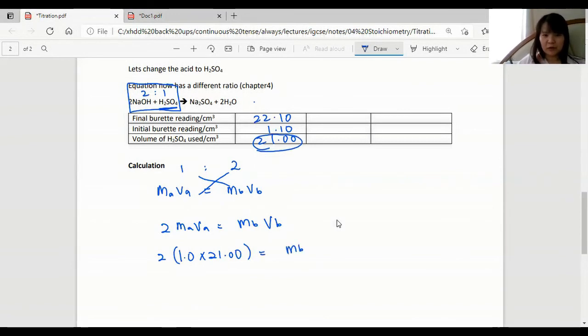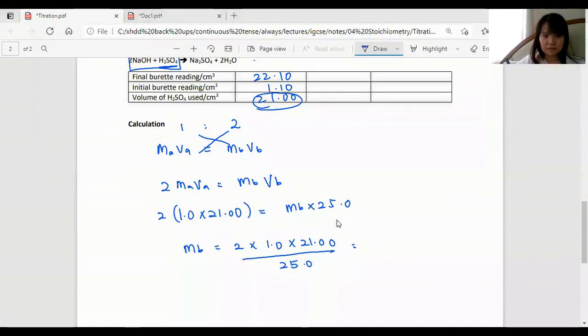M base, we don't know, and V base. So M base equals to 2 multiplied by this and divide by 25. So my concentration of base is 1.68 mole per dm cubed.